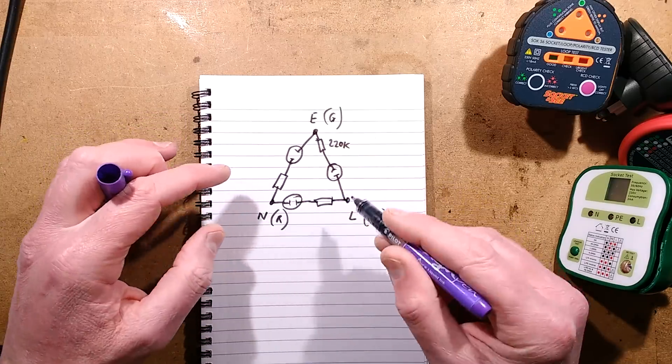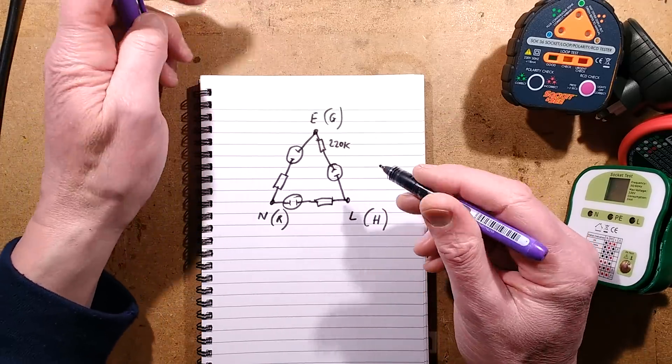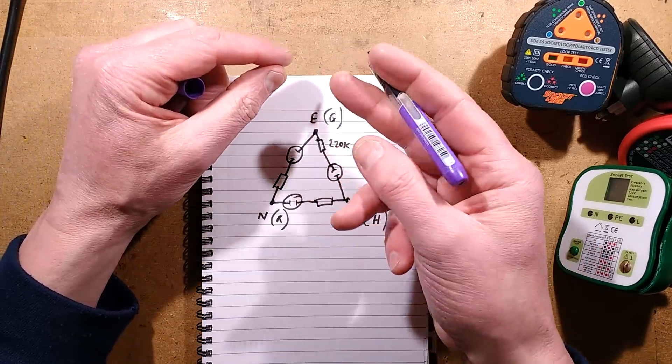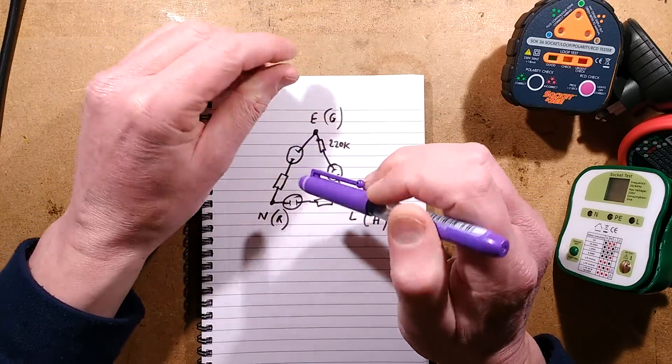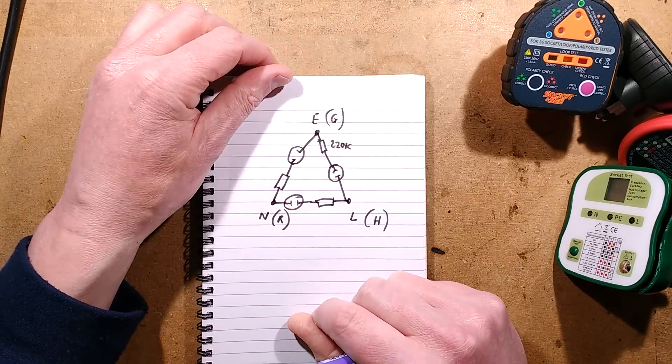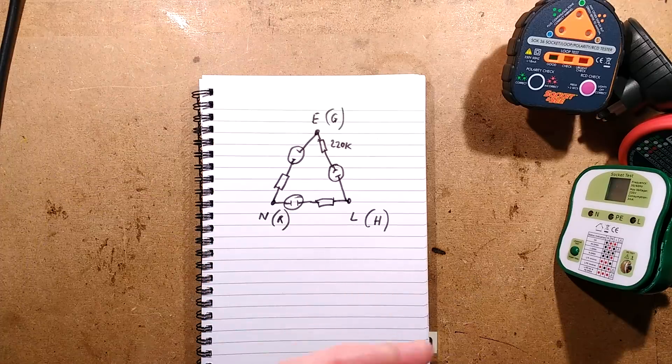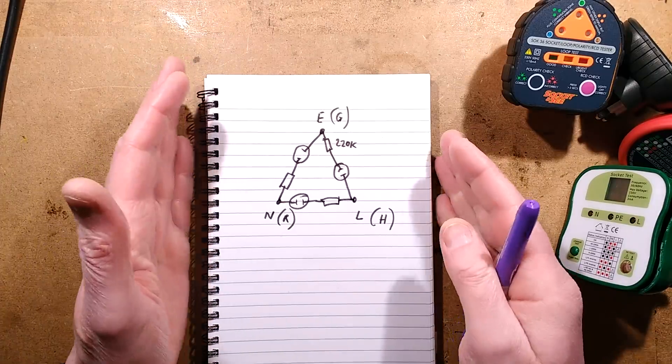Now these things can't detect a swap between neutral and earth because technically speaking they're bonded together in most installations. They're not in this installation because this is a TT electrical system that's feeding this particular building.